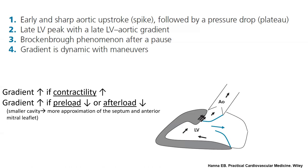Valsalva reduces preload and causes an increase in gradient. Exercise causes an increase in preload, but also an increase in contractility, which trumps the preload increase — so exercise causes an increase in gradient. Interestingly, post-exercise is when you get the highest gradient, more than during exercise itself. At immediate post-exercise, contractility is still high but venous return is starting to decline, so you get high contractility without as much rise in preload — yielding your highest physiologic gradient.